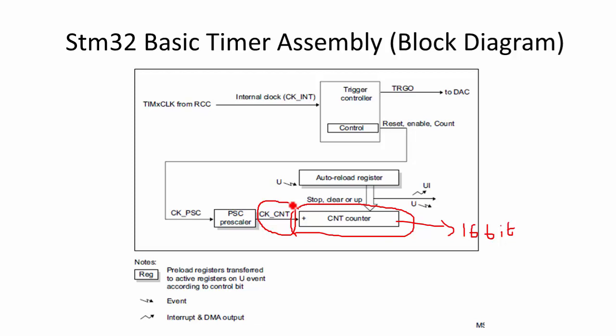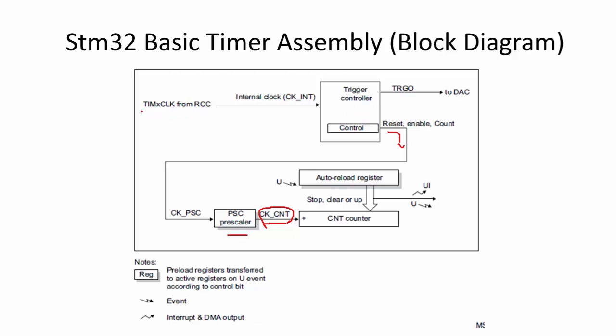The counting speed depends upon the count clock. This timer count clock is actually produced by the Prescaler engine. There is an input clock to the Prescaler engine, and that input clock is coming from the control block of the timer. For the control block of the timer, the main clock is coming from the RCC engine — reset and clock control. The RCC block manages clocks to the various peripherals of the microcontroller.